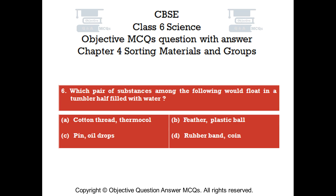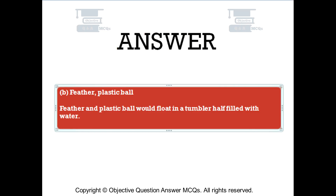Question number 6. Which pair of substances among the following would float in a tumbler half filled with water? Option A: Cotton thread and Thermocol. Option B: Feather and Plastic ball. Option C: Pin and Oil drops. Option D: Rubber band and Coin. The right answer is Option B — Feather and Plastic ball. Feather and plastic ball would float in a tumbler half filled with water.